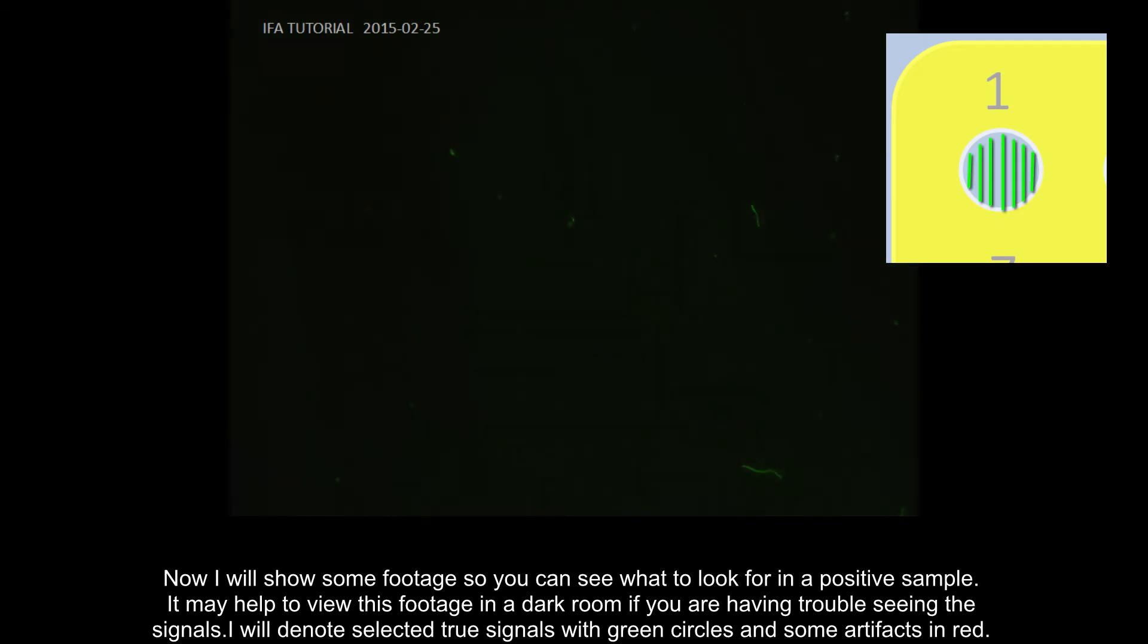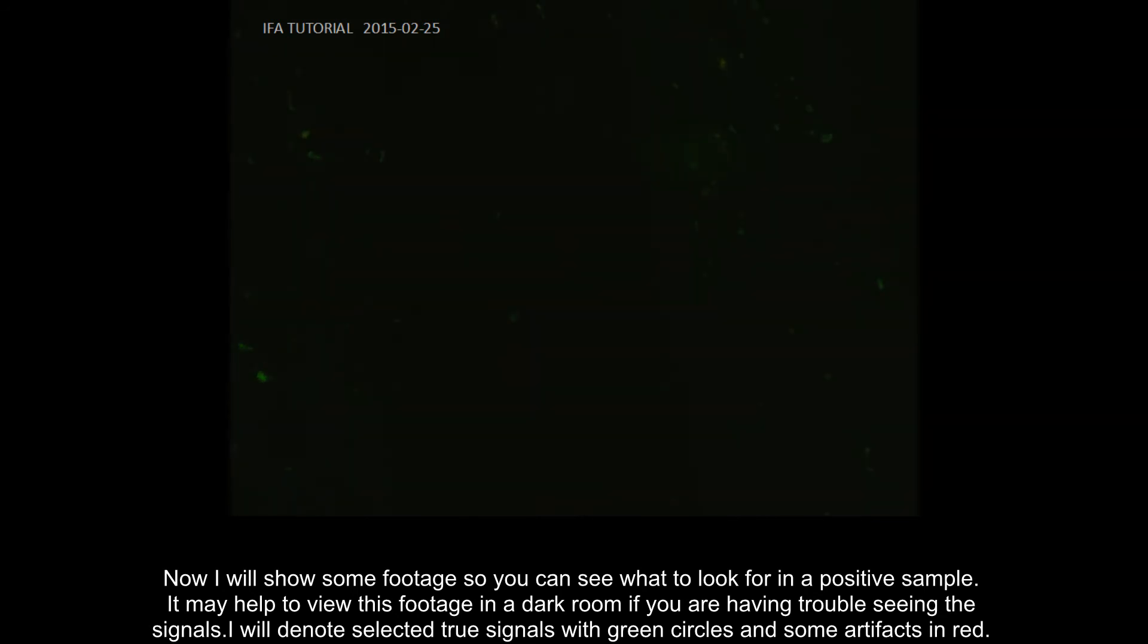Now I will show some footage so you can see what to look for in a positive sample. It may help to view this footage in a dark room if you are having trouble seeing the signals. I will denote selected true signals with green circles and some artifacts in red.